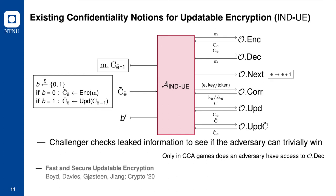The challenger randomly flips a coin B and responds with either a fresh encryption of message M, or an updated ciphertext of C, as the challenge ciphertext. Eventually, the adversary guesses the value of B. The adversary's task is to determine whether the challenge ciphertext was freshly created or is an update of the provided ciphertext.